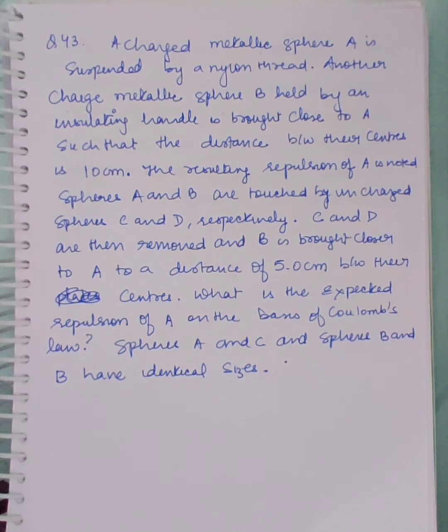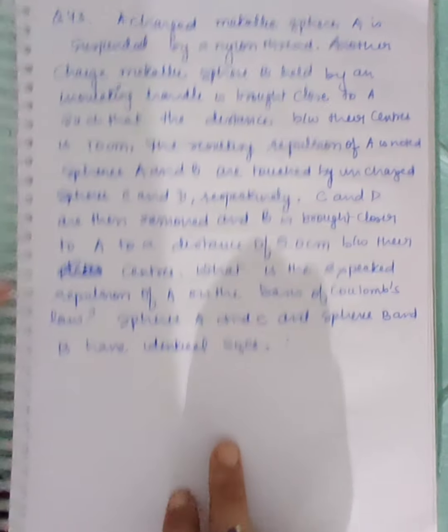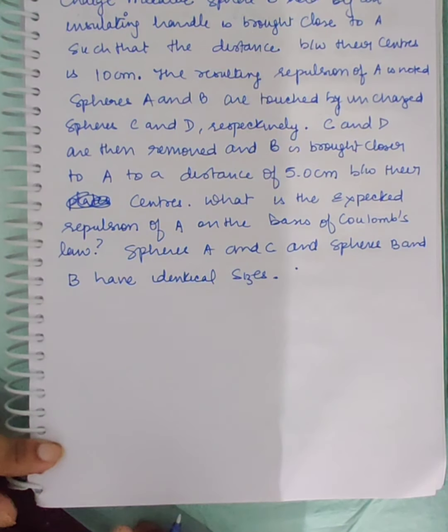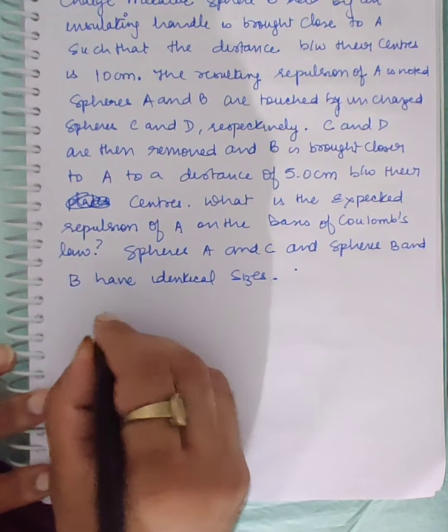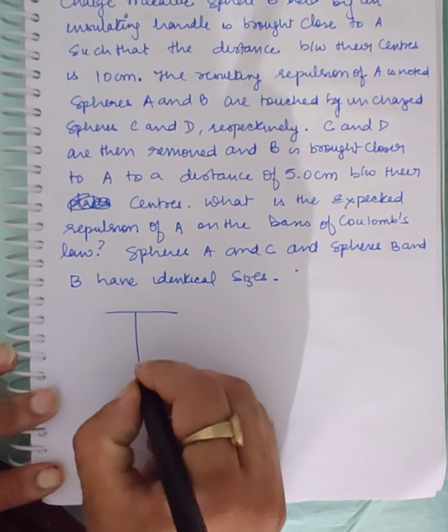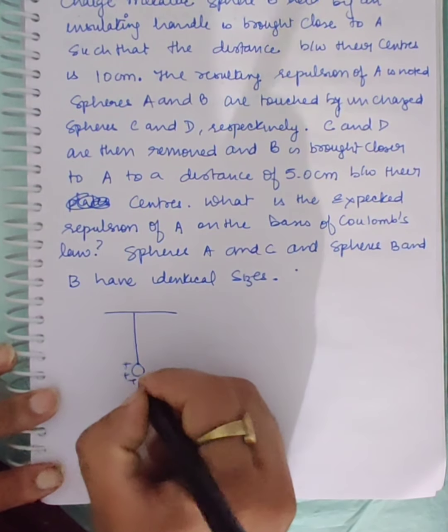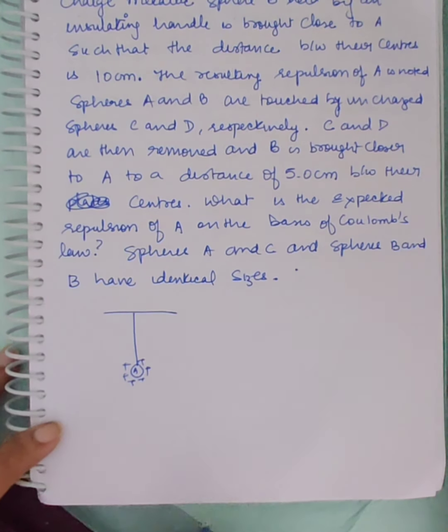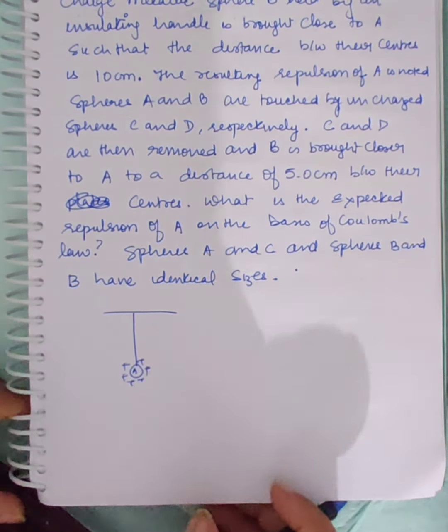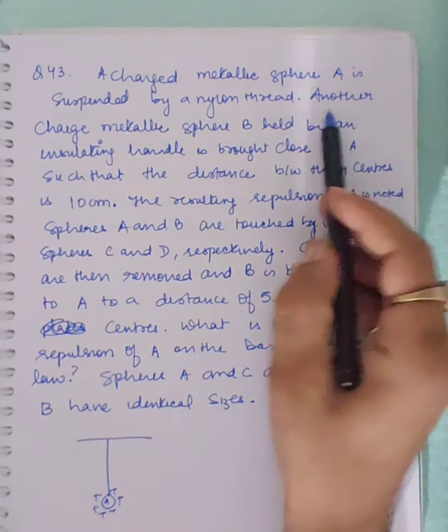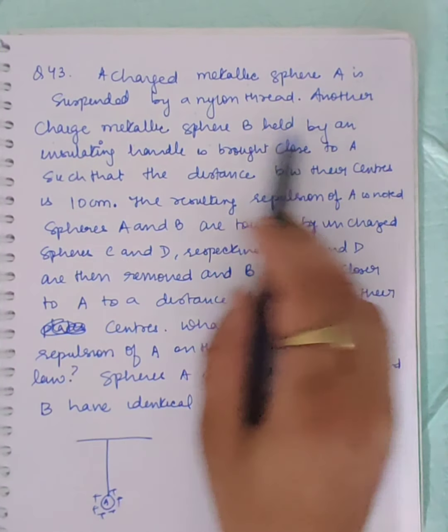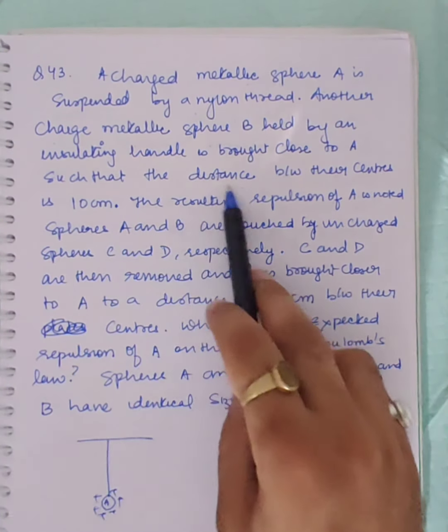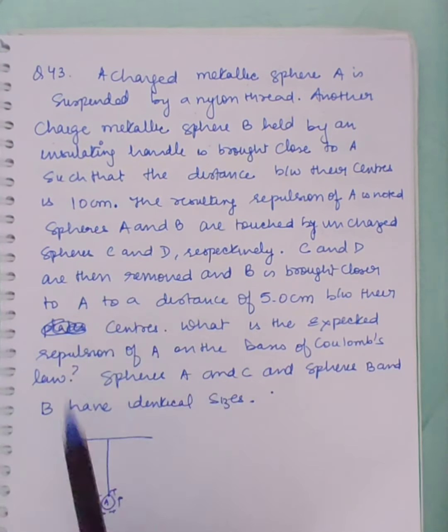Charged metallic sphere A is suspended by a nylon thread. Another charged metallic sphere B is held by an insulating handle and brought close to A such that the distance between their centers is 10 cm.